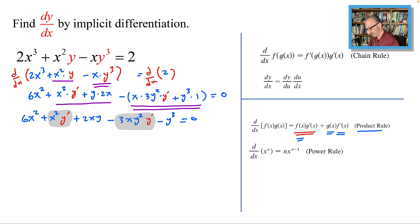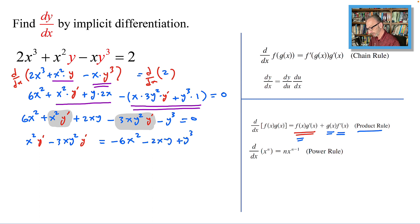Now these two terms have y prime, so we'll leave them on the left and move the other terms to the right side. We have: x²y' - 3xy²y' = -6x² - 2xy + y³.